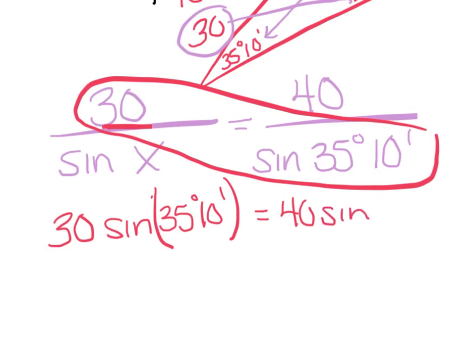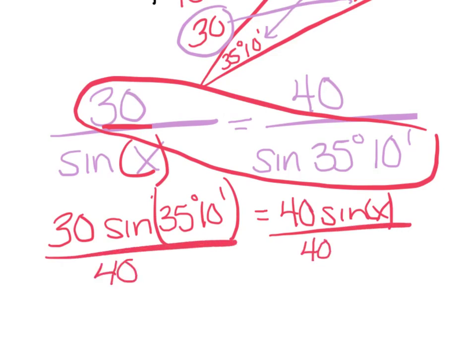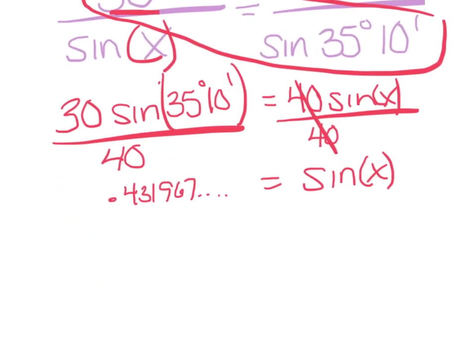Now remember, that sine is with the x. So I'm only going to divide out the 40. So over here, I'm left with sine of x. On this side, I'm going straight to my calculator. Remember to get those degrees in minutes, you're hitting second angle. I get a real ugly number, .431967, blah, blah, blah. Remember you're storing that. Hopefully you're amazing at storing that. I'm going to store that into alpha a equals sine of x. And to get rid of that sine function, you have to take the inverse sine of alpha a.